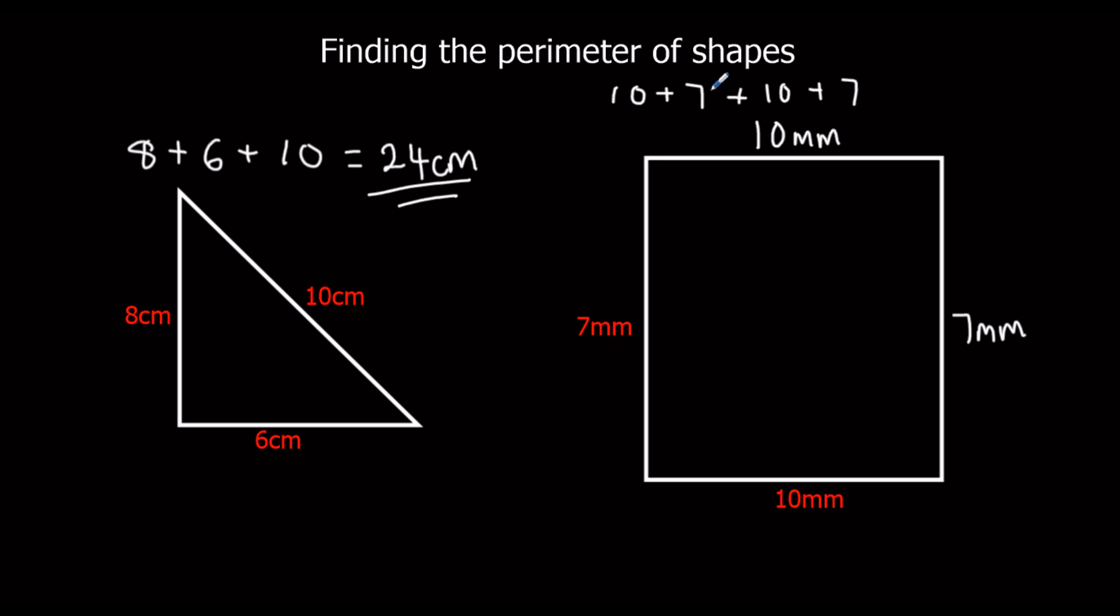10 plus 7, that's 17, and then we've got another 17 here, so 17 and 17, double 17, that's 34, in this case millimeters. So that's what we're doing when we're looking for the perimeter of a shape. So pause the video and see if you can work out the perimeter of these two shapes.